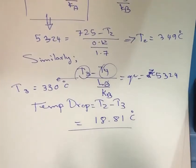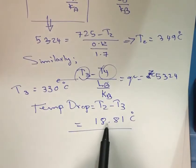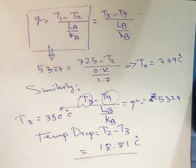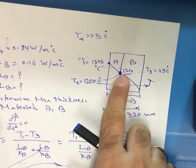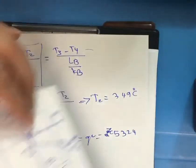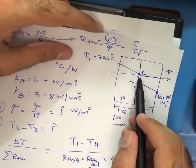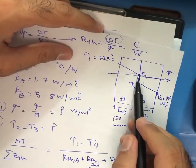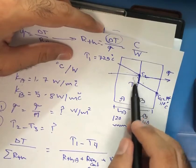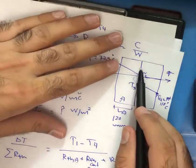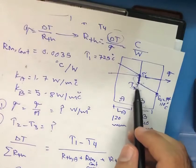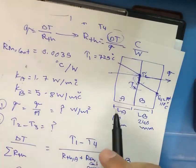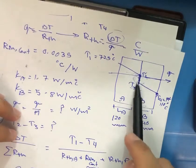This shows how significant the effect of contact resistance is on the temperature drop. It is very important to include the effect of interface temperature drop because the temperature at the interface does not remain the same — there is a physical reason for this reduction. The drop is due to the contact between surface A and surface B: there is some loss in heat transfer due to friction effects at the interface.